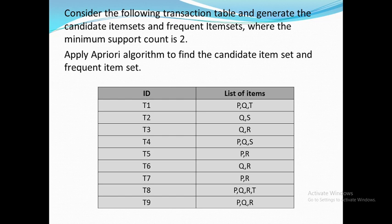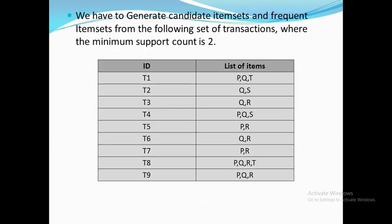The minimum support count given is 2. You can see our transaction table contains 2 columns. The first column is ID and the second column is the list of items. There are a total of 9 transactions, T1 through T9. Each transaction contains certain elements or a list of items. For example, transaction T1 contains item P, item Q, and item T. Transaction T2 contains item Q and item S, and so on.